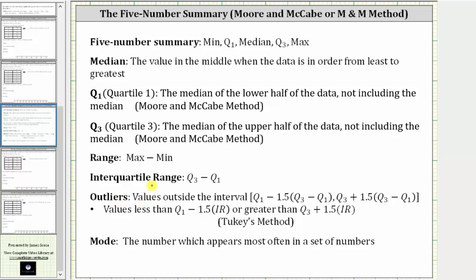And then to find the outliers, the TI-84 uses Tukey's method, where the outliers are the values that are less than quartile one minus 1.5 times the interquartile range, or greater than quartile three plus 1.5 times the interquartile range.